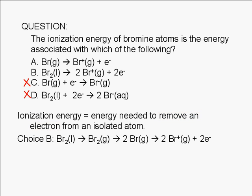Choice B can also be eliminated because the bromine atoms in Br2 are not isolated. By isolated atoms, we mean atoms not bonded to any other atom and nowhere near any other atom, which is the case in the gas phase.